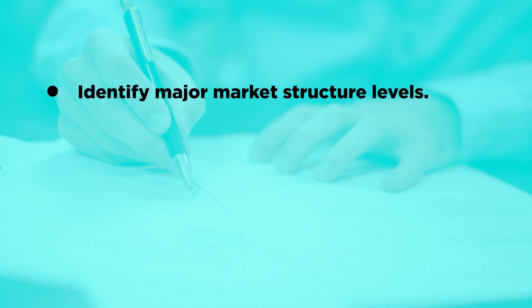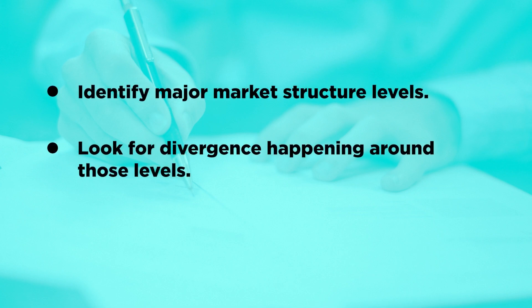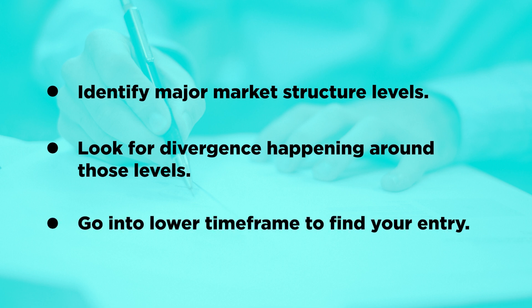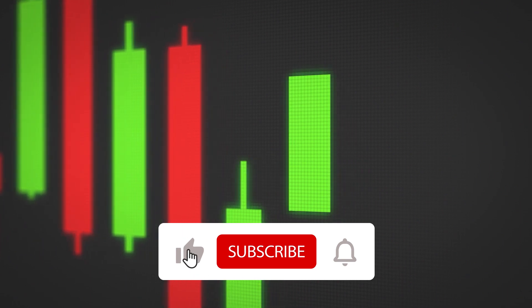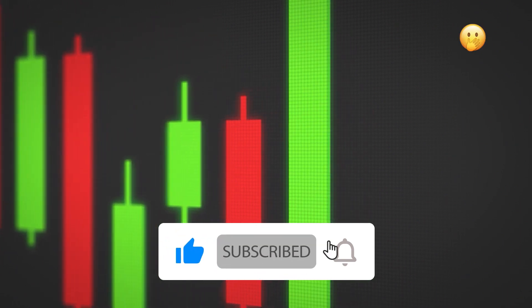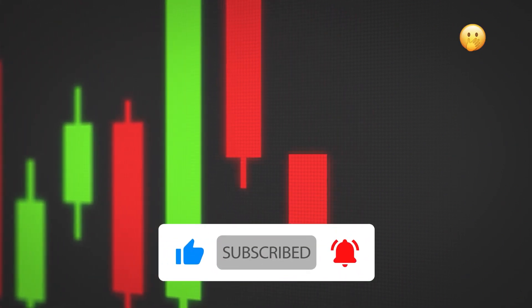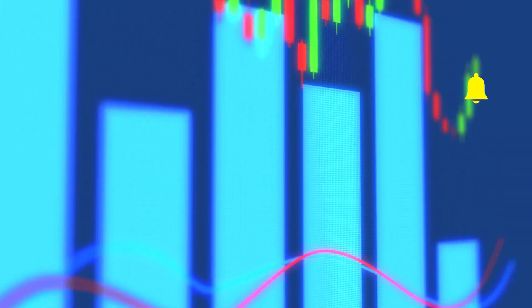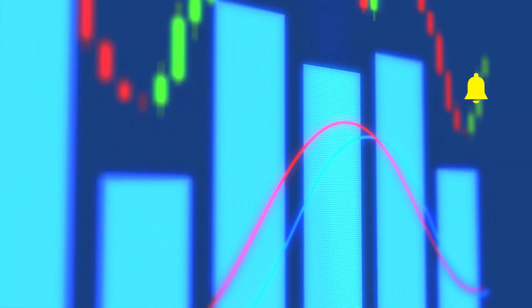To sum up this video: identify major market structure levels, look for divergence happening around those levels, and go into the lower timeframe to find your entry. Try it and let me know if this strategy works for you in the comment section. Remember to like this video, subscribe to the channel, and comment with the emoji plus 'win forex signals' to enter the giveaway. The winner will be announced in the next video, so turn on the notification bell.